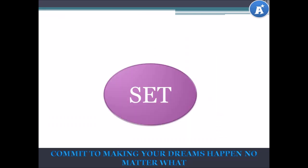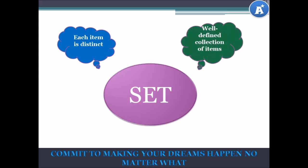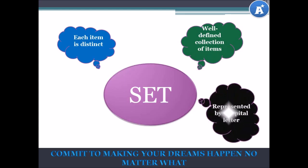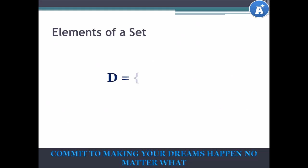Now let's look at what defines a set. What is a set? Let's go through the characteristics of a set. Firstly, each item within a set is distinct — this means that every item is only listed once. A set is a well-defined collection of items. It's represented by a capital letter. Each item is called an element or a member.